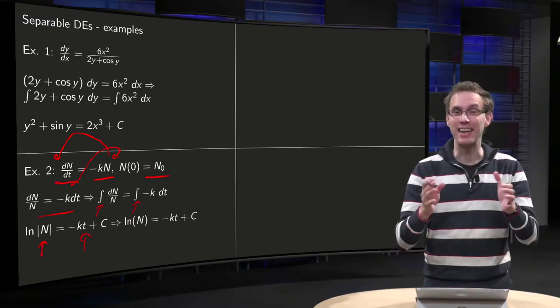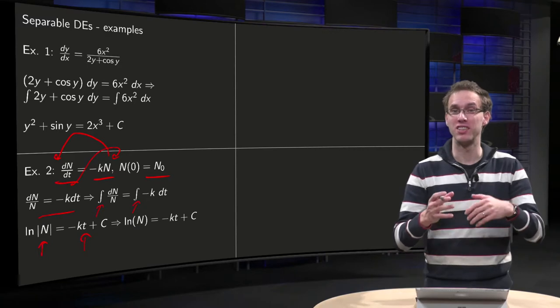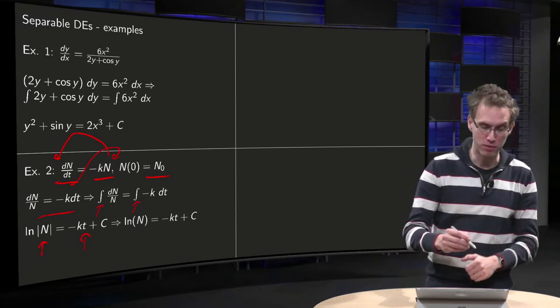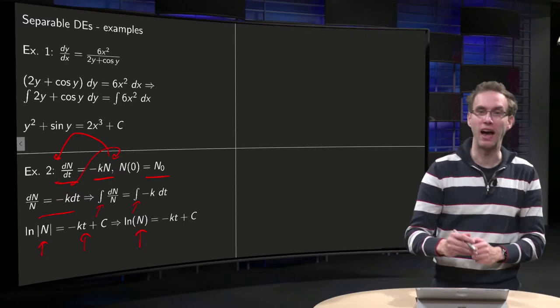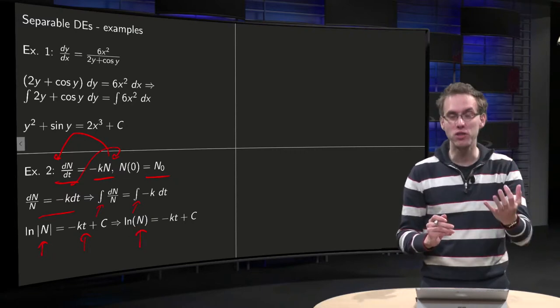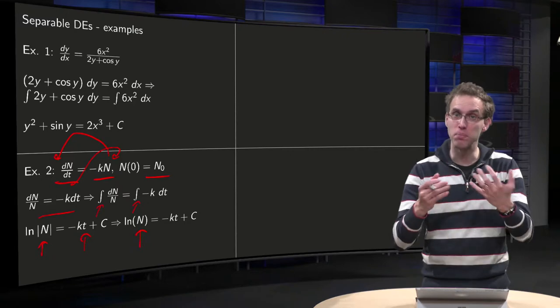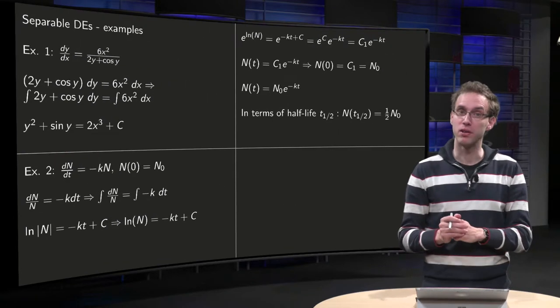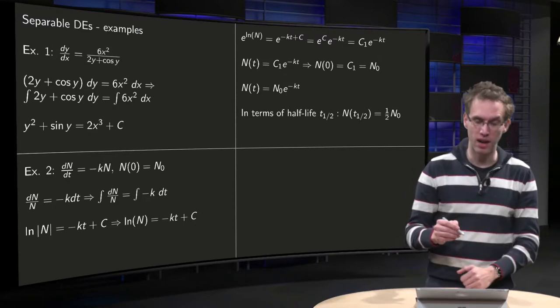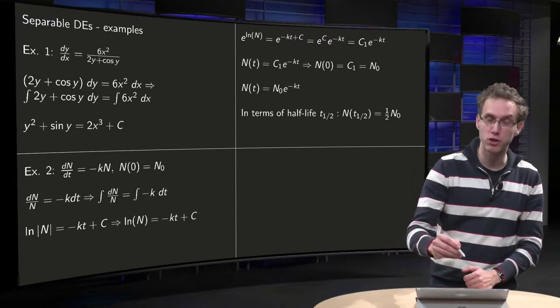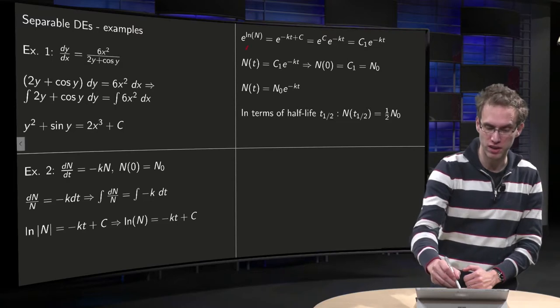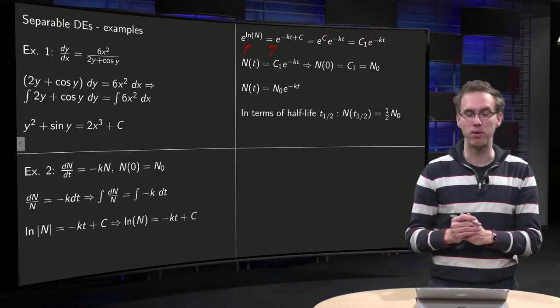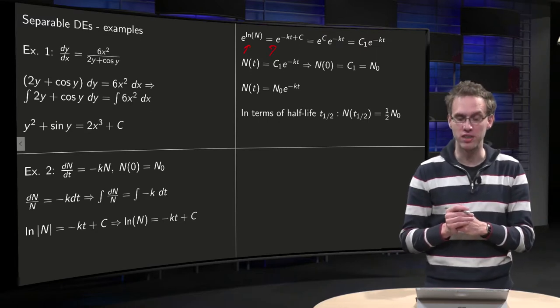Now, this n is a positive quantity because it is the number of atoms, so the ln of the absolute value of n is just the ln of n. So here we use a physical argument to simplify our problem. And now we continue, we want to solve for n. Of course, we take the exponential on the left-hand side and the right-hand side, we get e to the power ln on the left-hand side, and e to the power minus kt plus c on the right-hand side.